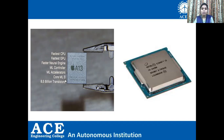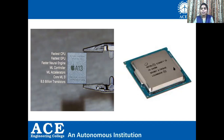In your mobile phone you have processors, and these processors have billions of transistors. In the same way, in your laptop you can see an Intel i5 processor. On the left-hand side, 8.5 billion transistors are embedded in this small processor. On the right-hand side, the Intel i5 processor has 1.7 billion transistors embedded in its core. This is why transistors are very important to study.